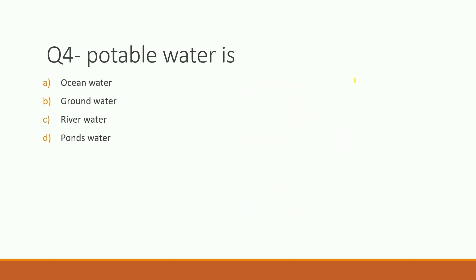Fourth question: potable water is which type of water? Options are ocean water, groundwater, river water, or pond water. The right answer is groundwater. Ocean water contains salt, river and pond water may be contaminated, so groundwater is considered potable — safe for drinking.